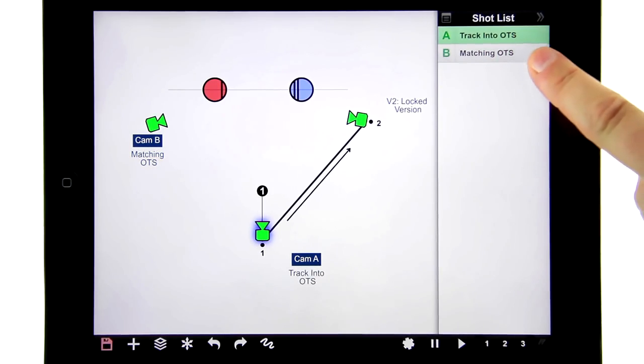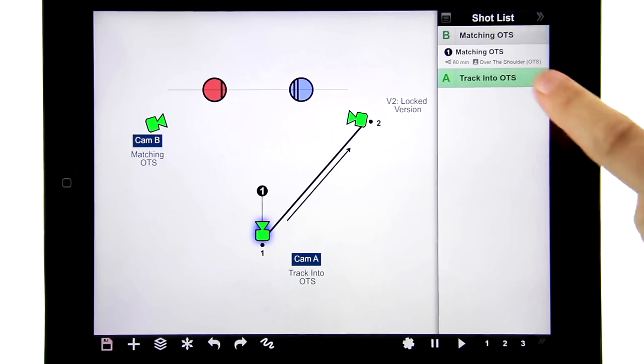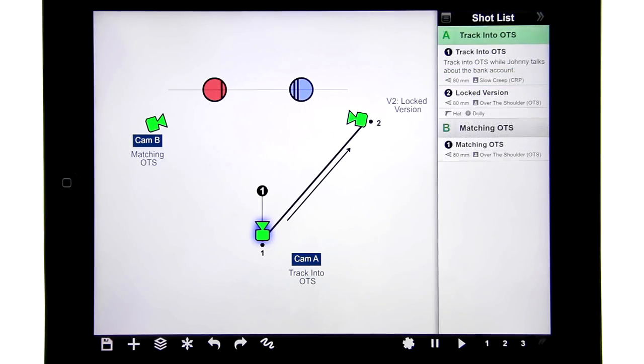And if I long press any of the shots in the shot list I can rearrange them, so basically I'm now rearranging the shooting order. And that's it.